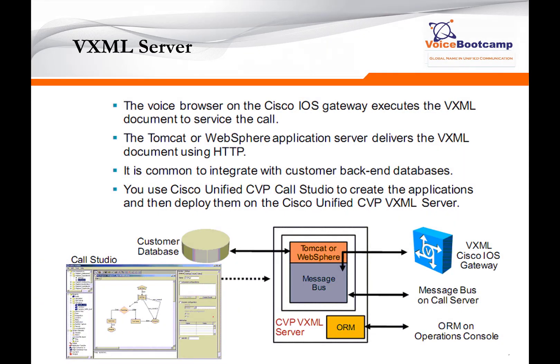The VXML server provides a voice browser on the Cisco IOS gateway and can send a request to the VXML server to execute a particular VXML application. The VXML server usually contains a Tomcat or WebSphere application server, which delivers VXML documents via the HTTP protocol. You create your application using call studio, upload it to the VXML server, and then a request from the Cisco IOS gateway will come into the VXML server to execute the script you developed using HTTP.